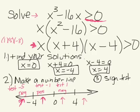Test a value on the right side of 4 — I'll test x = 5. You can pick any number in that region: 6, 7, 10 — it doesn't matter. Plugging in: (5)(5 + 4)(5 - 4) = (5)(9)(1) = 45. That's positive.